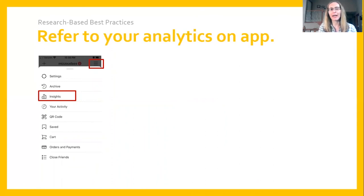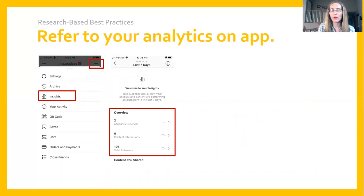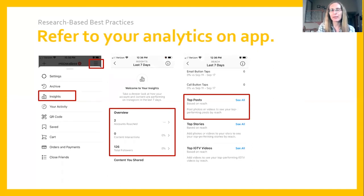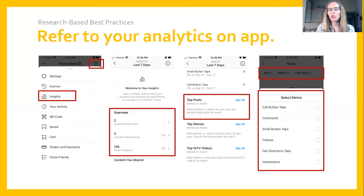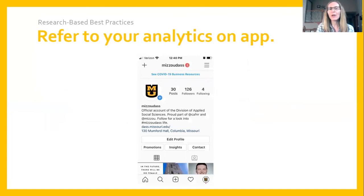If you're looking for more general data about your account, go to your profile page and click the hamburger icon — the icon with three horizontal lines — in the upper right-hand corner, then choose 'insights.' From there you can see an overview of your account for a particular time period, and drill deeper into how your posts, stories, or Instagram TV videos have performed. You can choose the type of metric you'd like to see over a given period of time, and the app will provide that information. This same insights platform is also accessible directly from your profile page by clicking 'insights' about halfway through the screen.